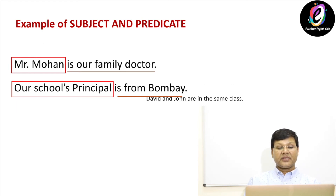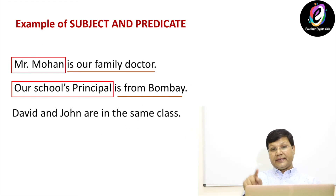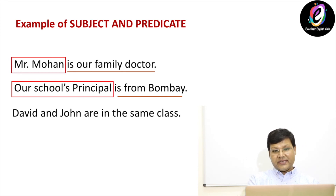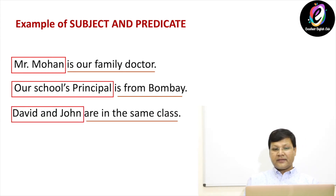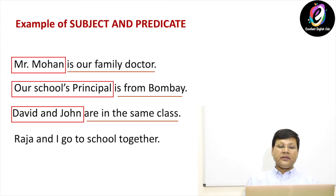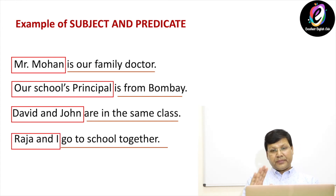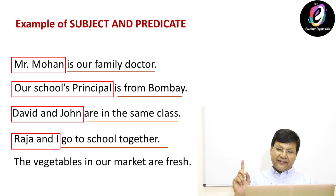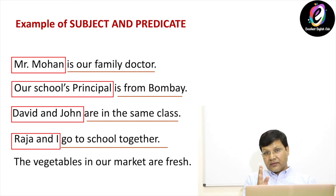Next sentence: 'David and John are in the same class.' So 'David and John' is the subject; 'are in the same class' is the predicate. One more example: 'Raja and I go to school together.' Again, 'Raja and I' is the subject; 'go to school together' is the predicate. The last one: 'The vegetables in our market are fresh.' Here 'the vegetables in our market' is the subject; 'are fresh' is the predicate.